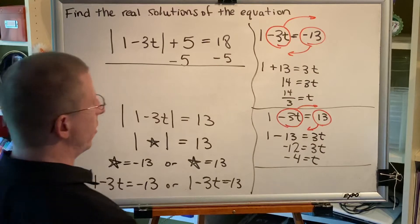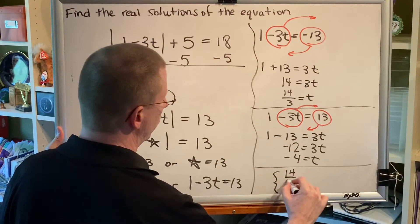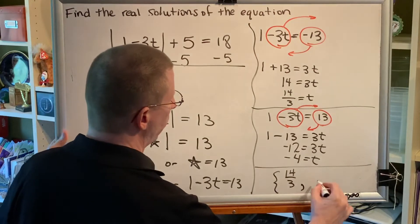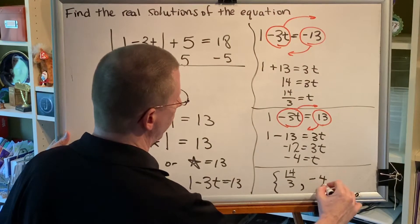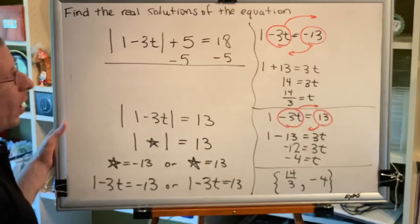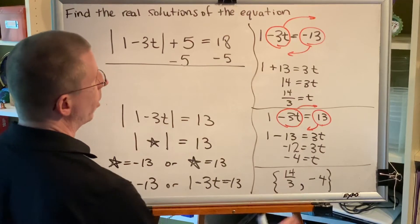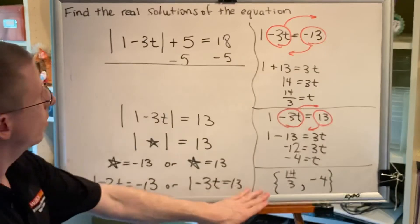So, there are two answers to this problem. The first one is 14 thirds. The second one is negative 4. When you can count the number of solutions to a problem, you can place them in a set separated by a comma. So, this is our answer in set notation.